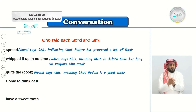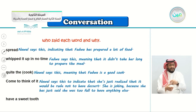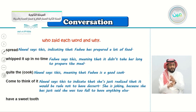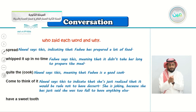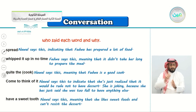'Come to think of it' — Nawal says this to indicate that she's just realized it would be rude not to have dessert. She's joking, of course, because she had just said she was too full. When offered chicken and asparagus she said no, but when Fadwa offered cake and crème brûlée, she changed her mind. 'Have a sweet tooth' — Nawal says this meaning she likes sweet foods and can't resist the dessert.